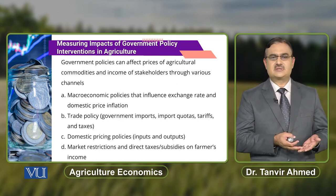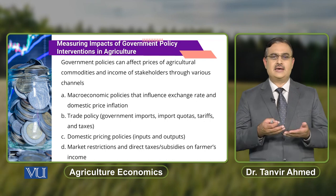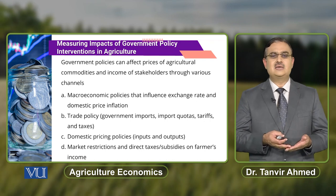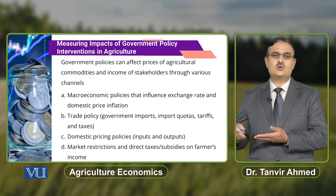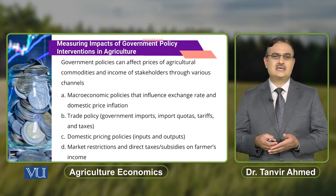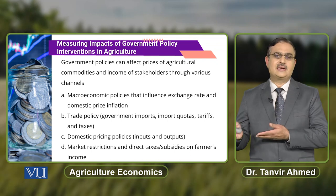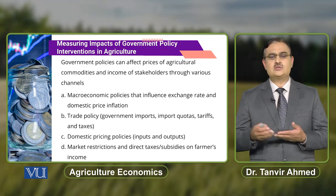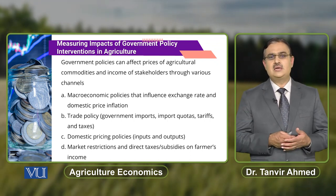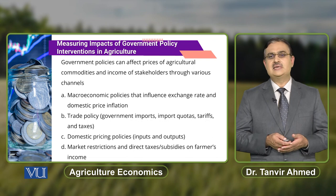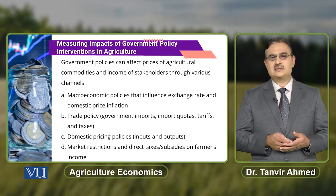Market restrictions and direct access and subsidies on farmers' income also have some effect on the prices of agricultural commodities and the income of the stakeholders.